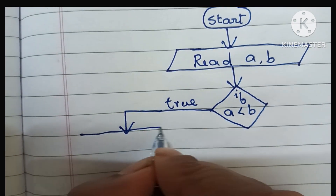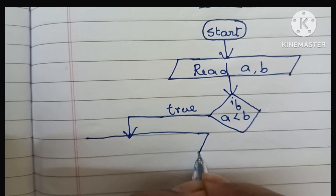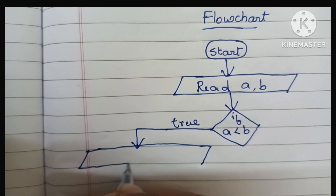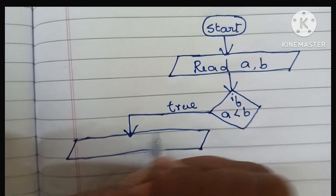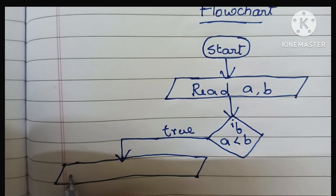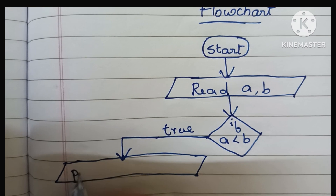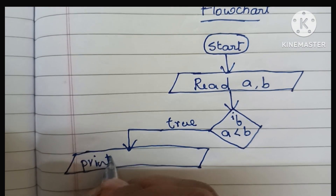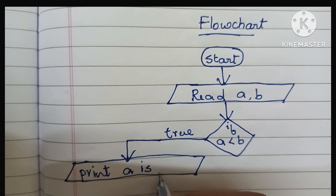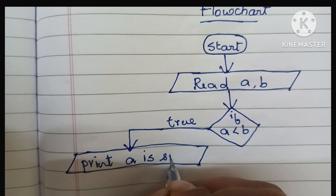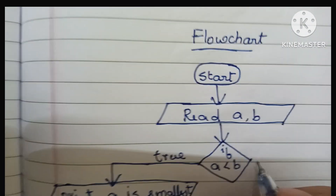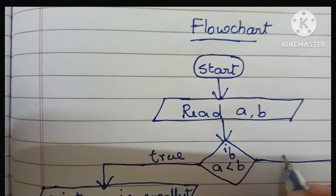We have to print 'a is smallest'. Output is always written within a parallelogram shape, so we draw a parallelogram shape and within that we print 'a is smallest'. If this condition is false...